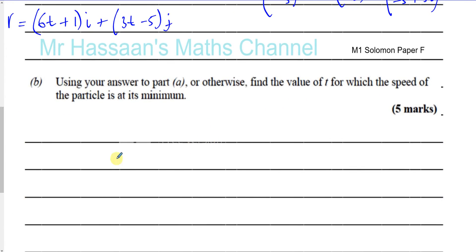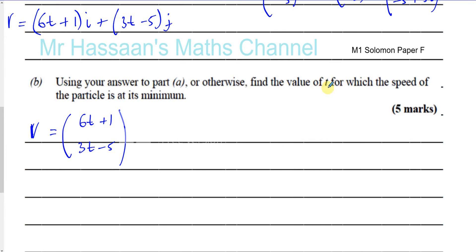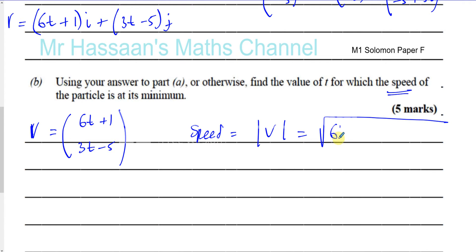Using your answer to part a, our velocity vector is (6t + 1)i plus (3t minus 5)j. Find the value of t for which the speed of the particle is at its minimum. The speed is equal to the magnitude of the velocity, which is the square root of (6t + 1) squared plus (3t minus 5) squared.